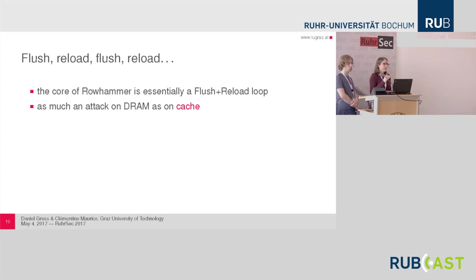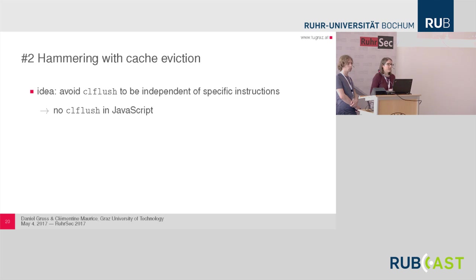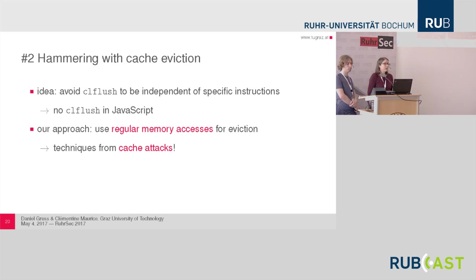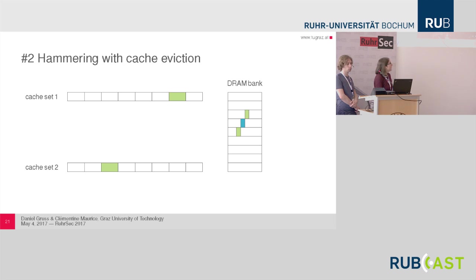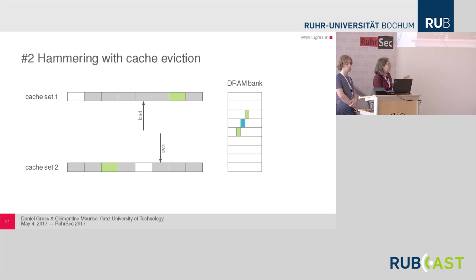We can avoid the CLFLUSH instruction to be independent of that specific instruction — since there is no CLFLUSH in JavaScript, for example. Our approach was to use regular memory accesses to evict data from the cache: Rowhammer with prime and probe rather than flush and reload. It works like this: data is accessed from DRAM and goes into a cache set; we then evict those lines by performing different loads that go into the same cache set, progressively filling it until we've evicted the data we want. Then we reload from DRAM and so on until we have bit flips. The challenge is the replacement policy of the CPU cache — on modern CPUs it's not LRU — so we had to find effective cache eviction strategies.